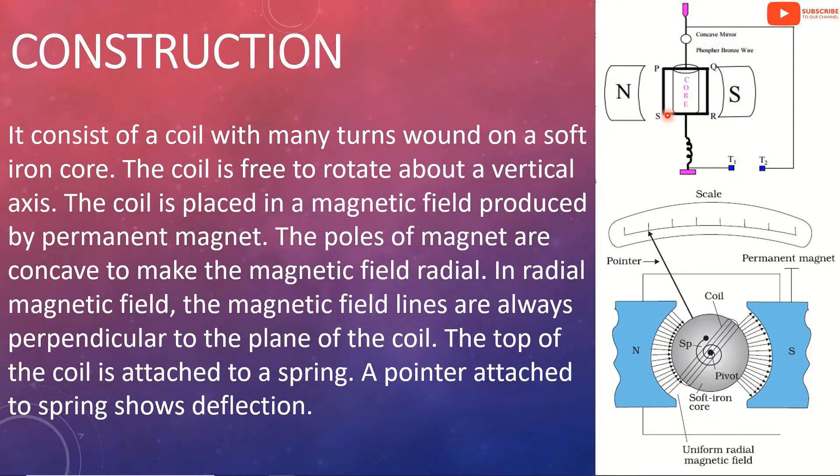The moving coil galvanometer consists of insulated copper wire in a rectangular coil.